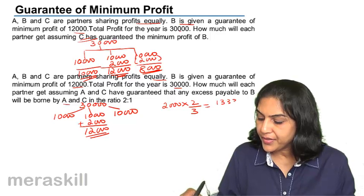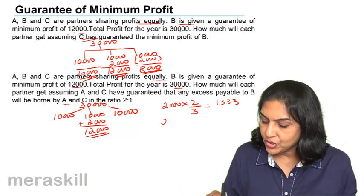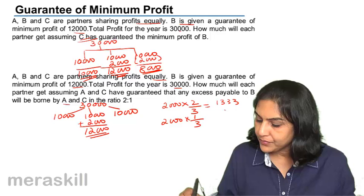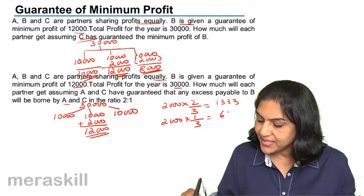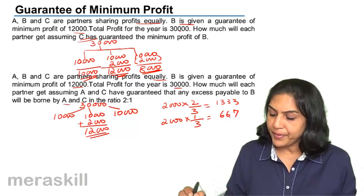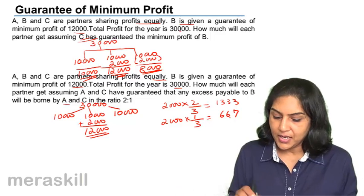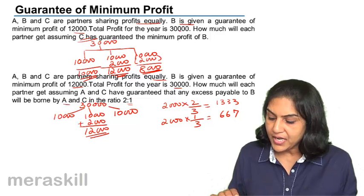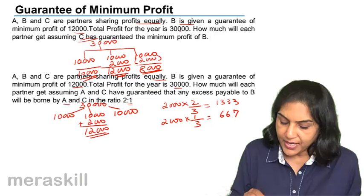1,333 and 2,000 into 1 by 3. So 3,000 will be borne by C in the ratio 2 is to 1. 2 by 3 will be borne by A, 1 by 3 will be borne by C. So how much is that?